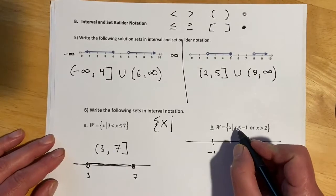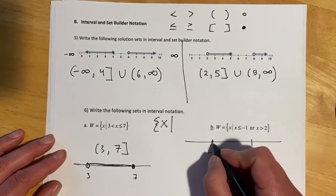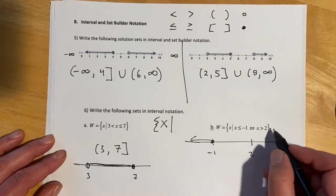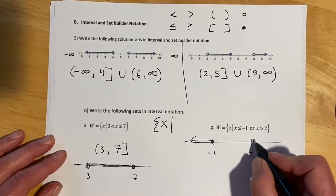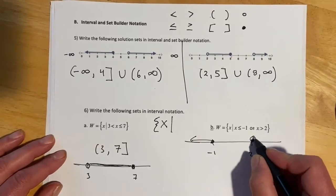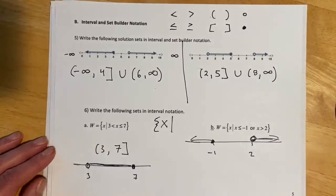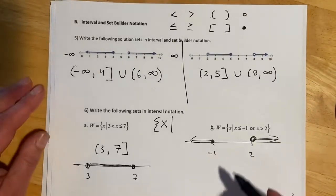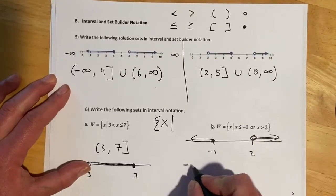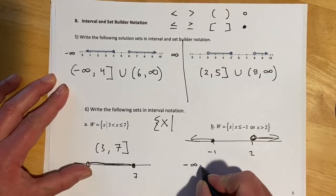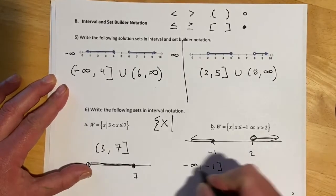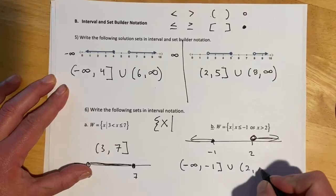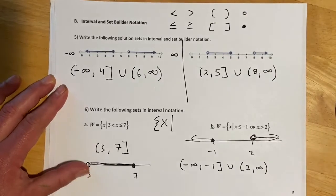This one looks: x is less than or equal to negative 1 — so that's going that way — or x is greater than 2, which would be going that way with an open dot. So for interval notation, this would go from negative infinity to negative 1 with a bracket, then union, then 2 to infinity with a parenthesis.